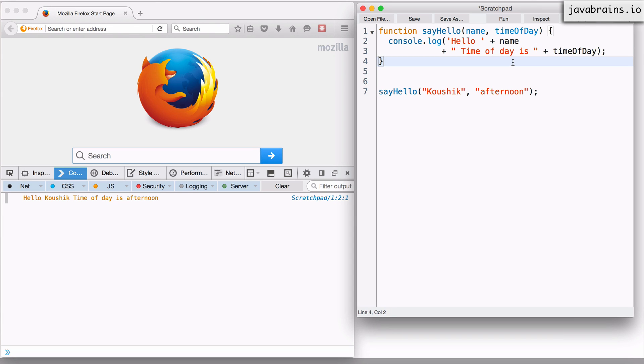What is surprising to some people though is what happens if I call this function with just one argument. Now, you notice I've declared the sayHello function with two arguments.